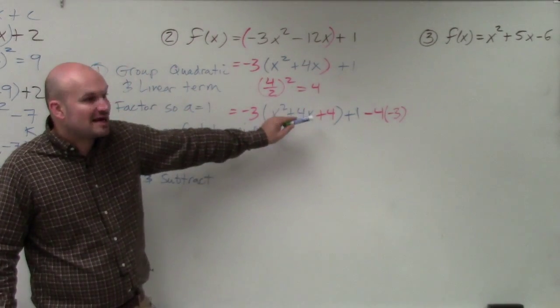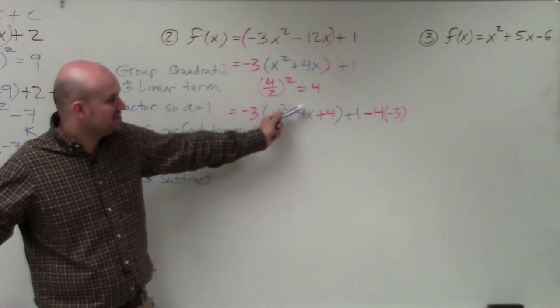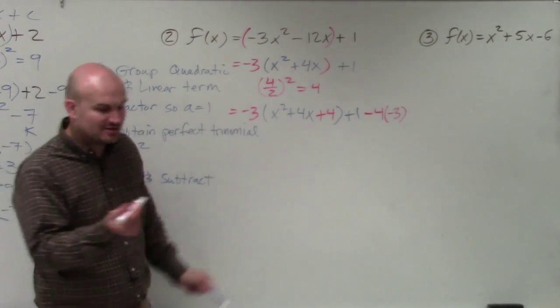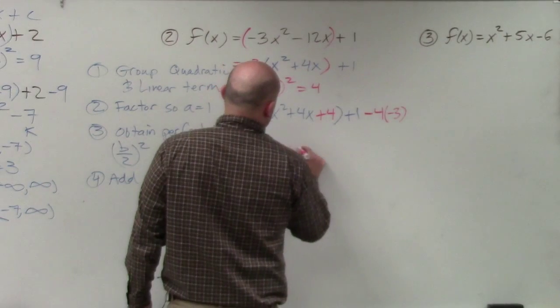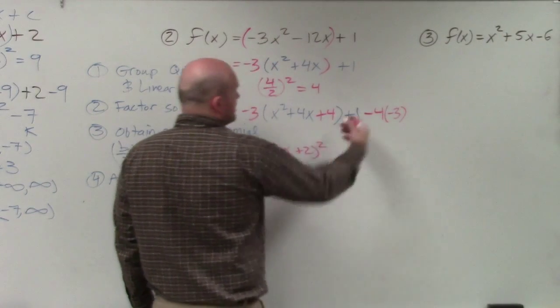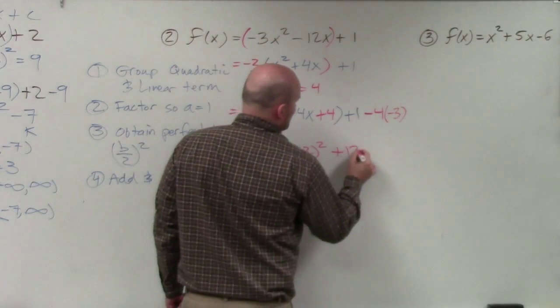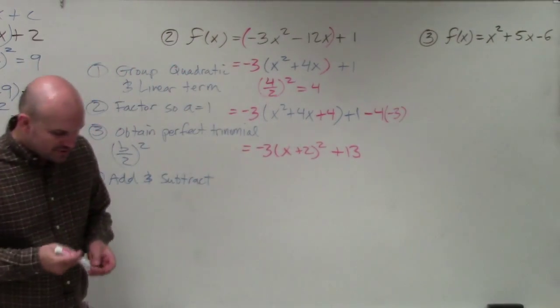Now, I know this can be factored. Again, this is just remembering factoring. Students always get stuck with this. This is just your factoring. So this becomes negative 3(x plus 2) squared. That becomes positive 12 plus 13.